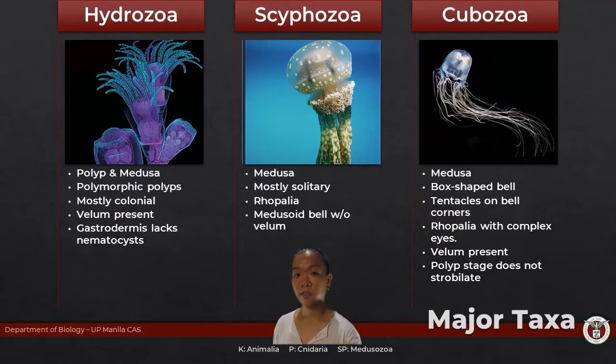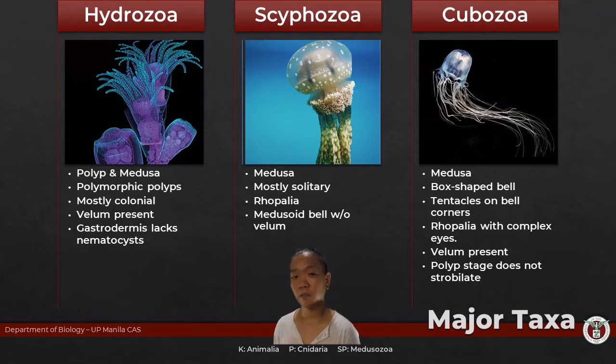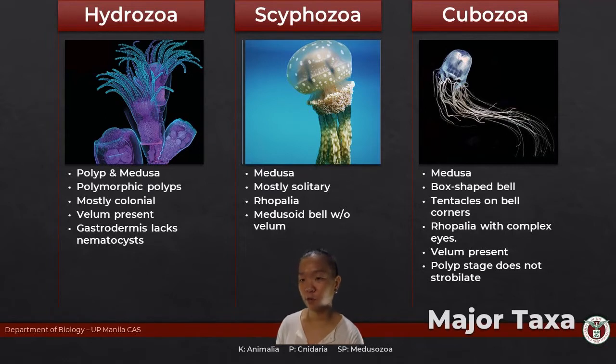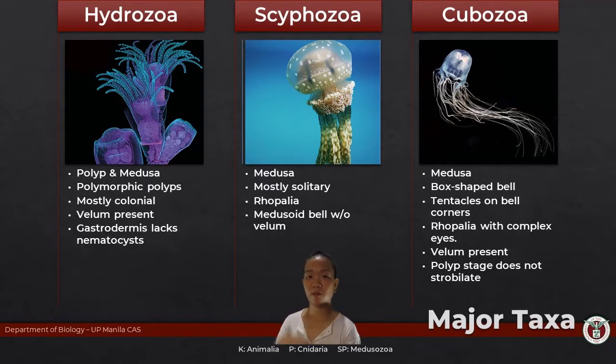Cnidarians are generally grouped into two major subphyla: Medusozoa and Anthozoa. Within Medusozoa, there are three main classes: Hydrozoa, Scyphozoa, and Cubozoa.